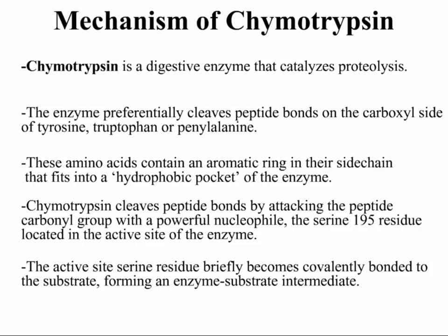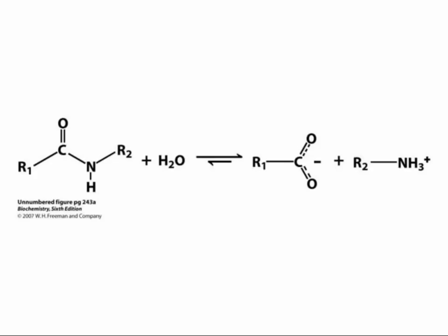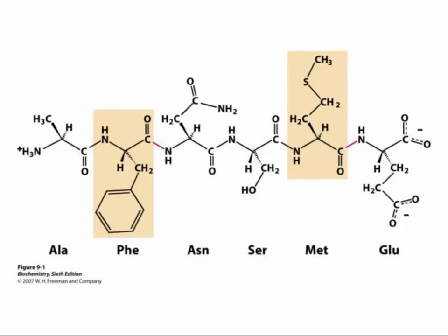The active site serine residue briefly becomes covalently bonded to the substrate, forming an enzyme-substrate intermediate. This figure shows the mechanism of peptide bond cleavage — a hydrolytic reaction which uses the elements of water to break a peptide bond and form a carboxyl group and an amino group. The reaction equilibrium is highly in favor of peptide bond cleavage. This peptide contains the amino acid phenylalanine, and chymotrypsin would cleave the bond shown in red between the carbonyl group of phenylalanine and the amino group of asparagine.